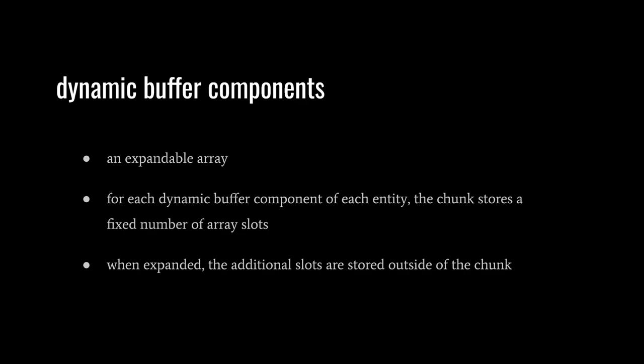While regular components cannot contain arrays, we can give our entities dynamic buffer components. These dynamic buffers are expandable arrays. For each dynamic buffer component of each entity, the chunk stores a fixed-size array, but these arrays can be supplemented with additional storage outside the chunk. For example, an entity might have a dynamic buffer component with five fixed slots stored directly in the chunk, but we can expand the array to have, say, 12 slots, in which case seven additional slots are allocated outside the chunk.